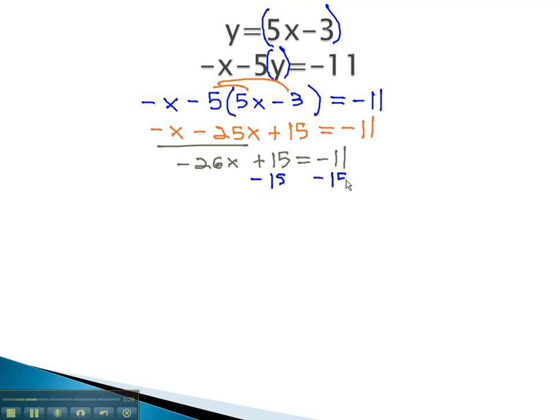Subtract 15 from both sides, and we get negative 26x is equal to negative 26. Divide both sides by negative 26, and we now know that x is equal to positive 1.